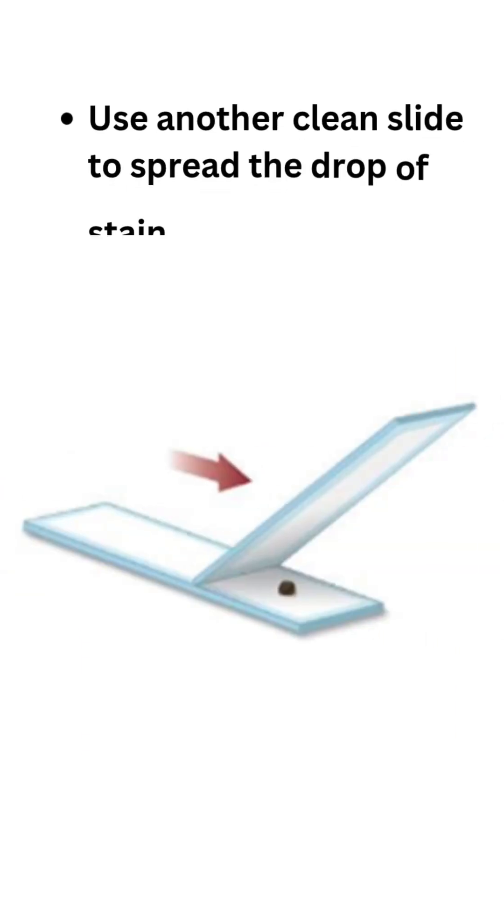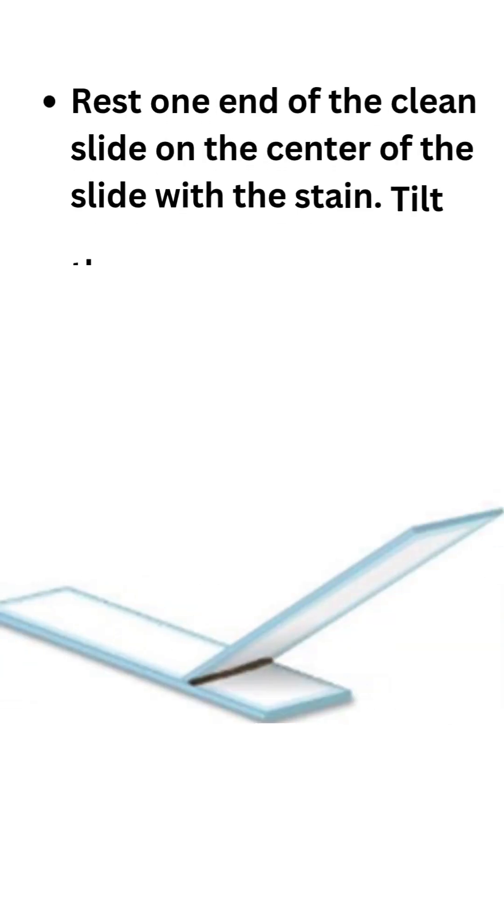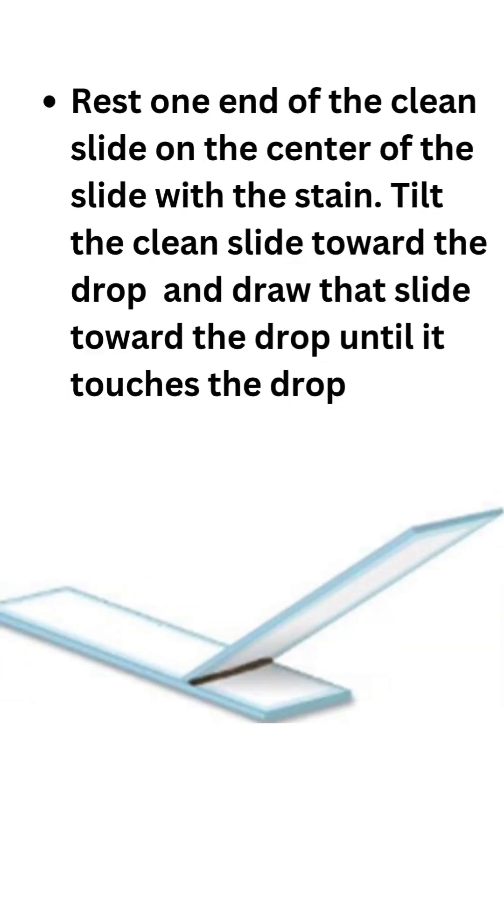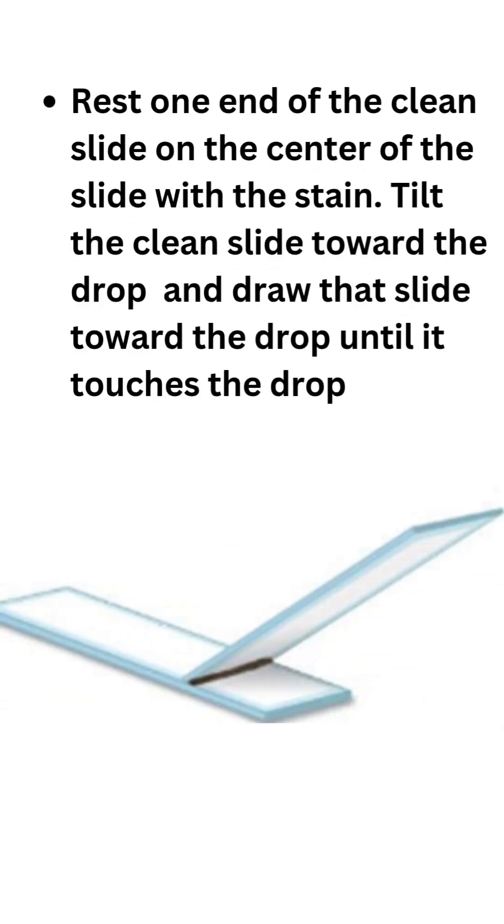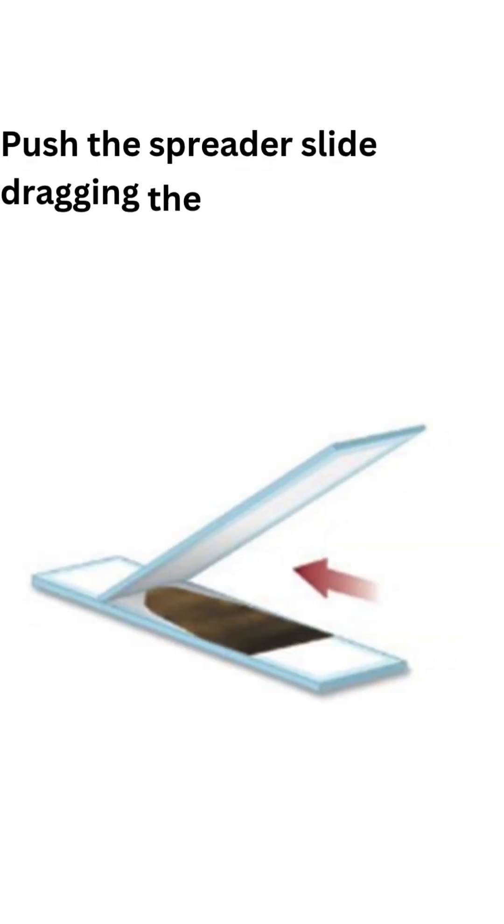Use another clean slide to spread the drop of stain containing the organism. Rest one end of the clean slide on the center of the slide with the stain. Tilt the clean slide toward the drop and draw that slide toward the drop until it touches the drop. Push the spreader slide, dragging the drop behind the spreader slide and producing a broad, even, thin smear.